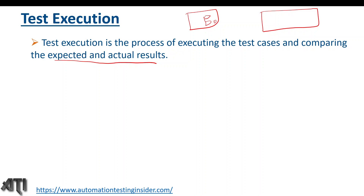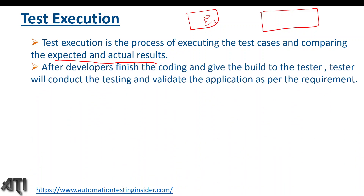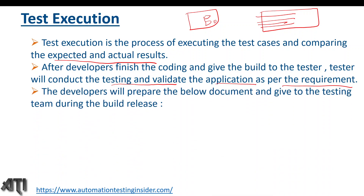The expected result is that we should see the home page. So as part of test execution, we execute our test cases and compare the expected with actual results — whether we are able to get the home page or not. Once we get the build from the developer after they finish coding, the tester will conduct testing and validate the application as per the requirement.